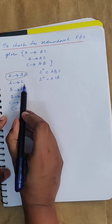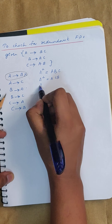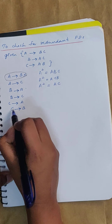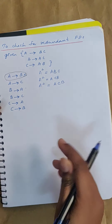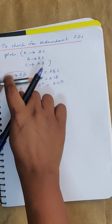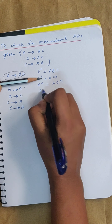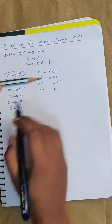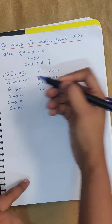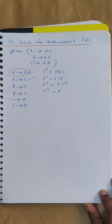Next check if A→C is redundant. Find A closure (A→B already removed): you get A, C, B — {A,B,C}. Now remove A→C and find A closure: you get only A. You are not able to derive C and B, so A→C is an essential functional dependency.